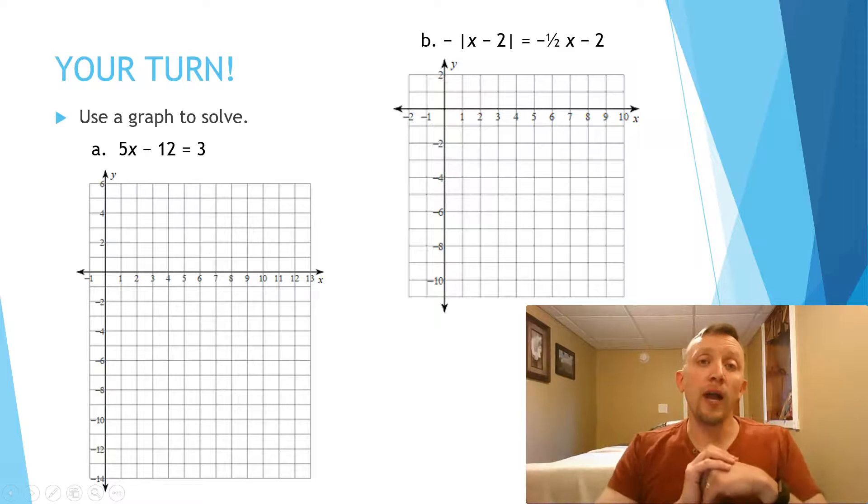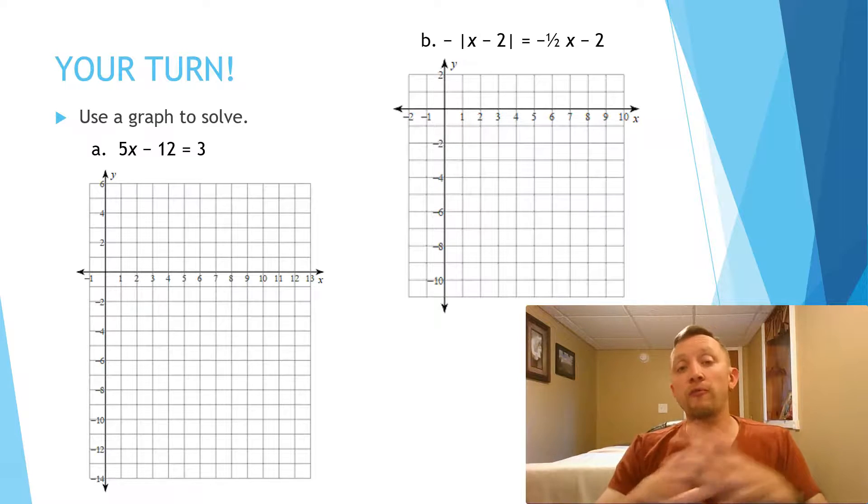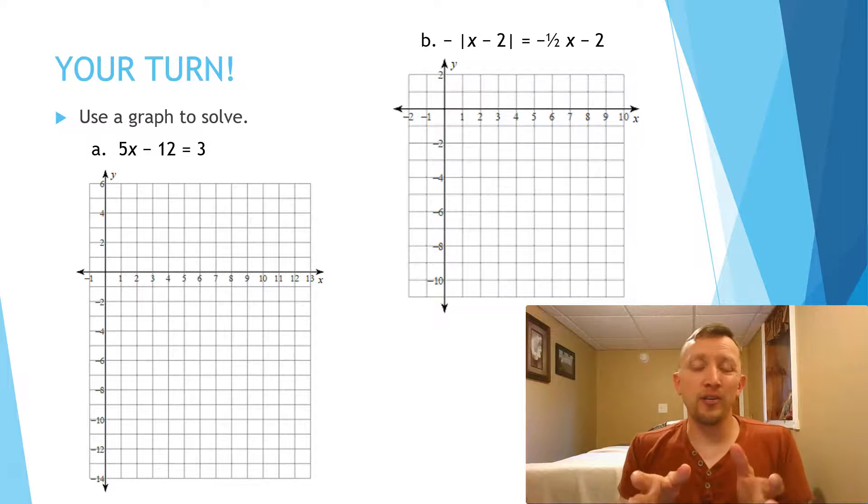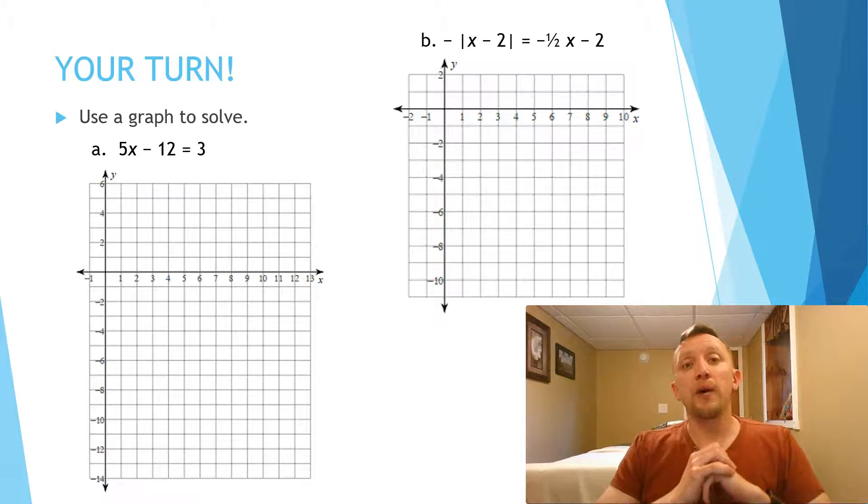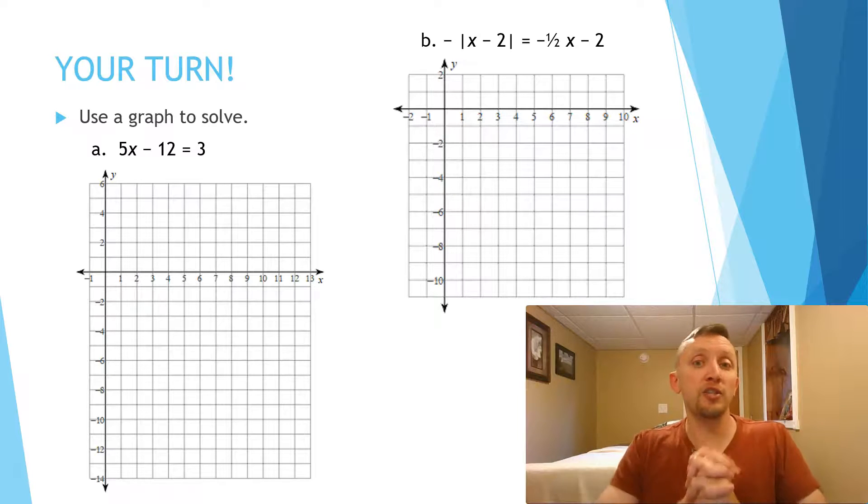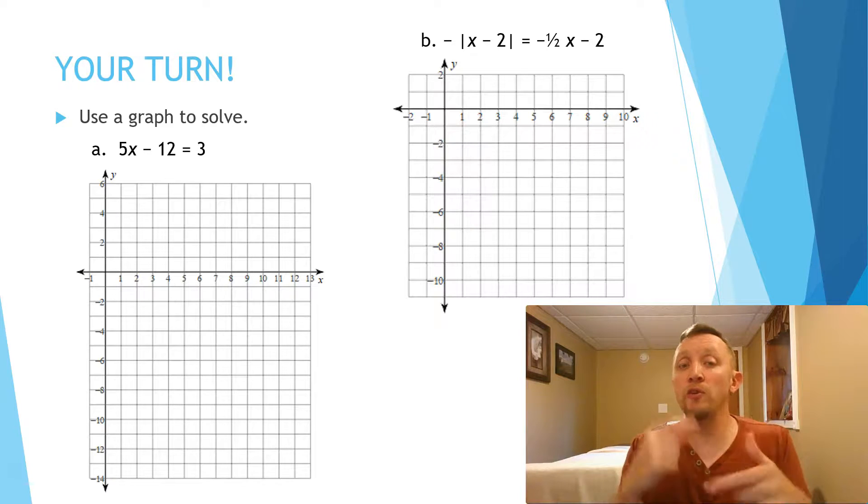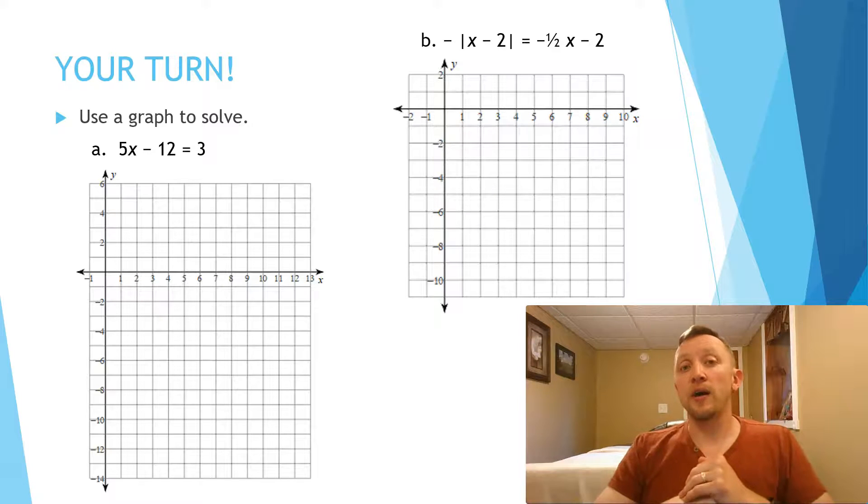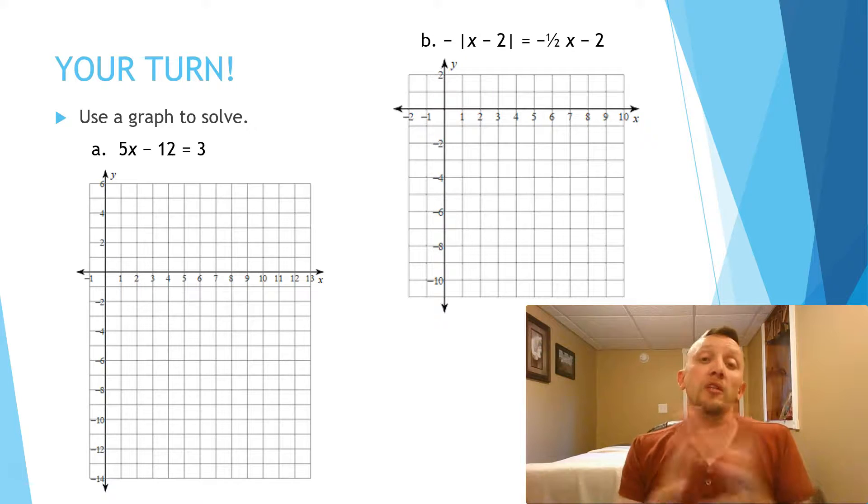Your turn. I want you to try both of these by graphing. Even though that first one, letter A, I know you could do that algebraically and probably get your answer faster, but I want you to do both of these by graphing. For that second one, you're going to have to go back and remember how we did some of those different transformations, because here we have a negative outside the absolute value. So you're going to want to review what that does to the graph of your absolute value function. I want you to pause this video and hit play when you're ready to check if you've done both of these correctly.